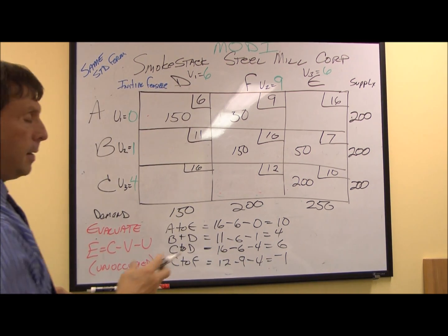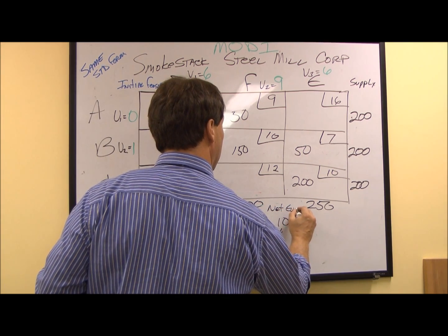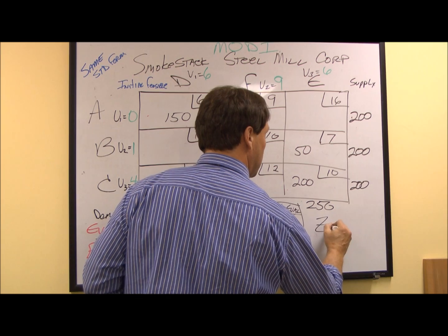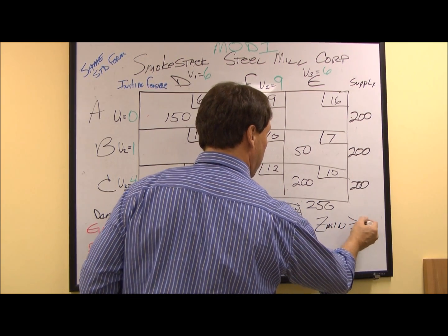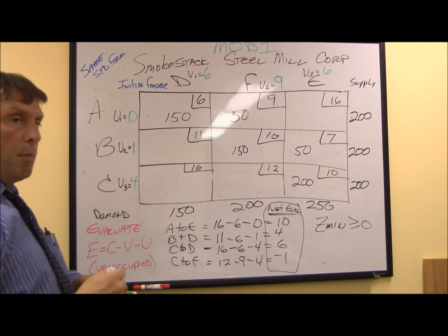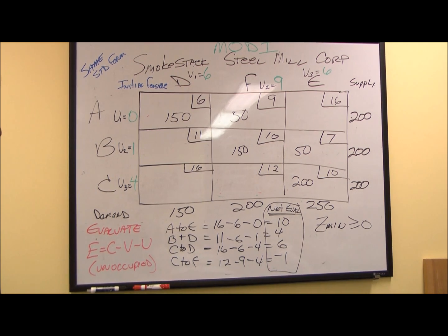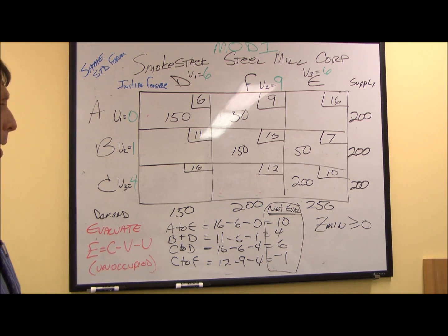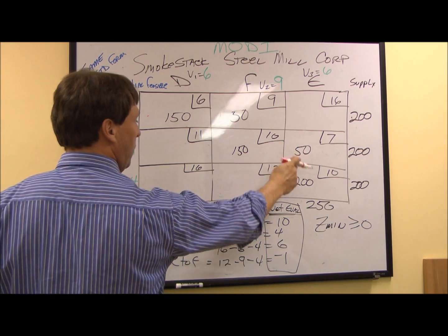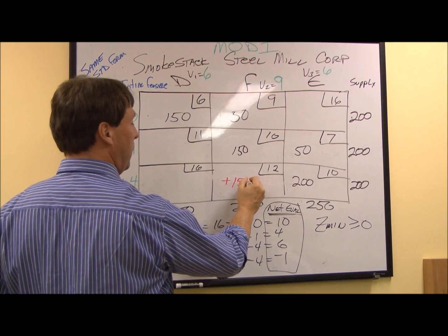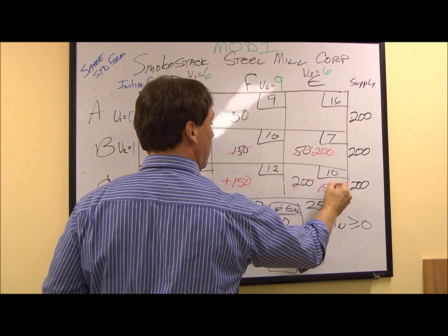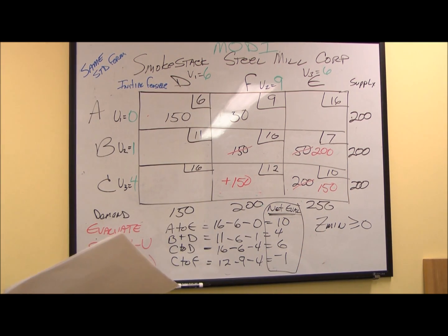This is the equivalent of our net evaluation row. To check for optimality, the minimum C value has to be greater than or equal to zero. We can see we can get more cost savings from shipping one more unit from Cleveland to Fort Worth. So we do the same thing as with the stepping stone method — we add 150 units here, subtract 150, add 150, and subtract 150. As you can see, we came up with the exact same results using the MODI method as we did with the stepping stone.